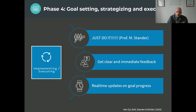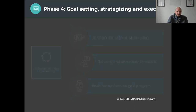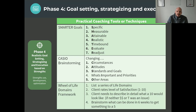We need to figure out a way to give real-time updates on goal progress. I utilize an application we've developed where a person can update their progress and I can also track where they are. There are certain strategies you can use — SMARTER goals: specific, measurable, attainable, realistic, and time-balanced goals that are also evaluative and can be readjusted if things don't go well. There's also the CASIO brainstorming technique: looking at what circumstances need to change, what attitudes need to change, what standards and goals you're setting, what the most important priorities are, and what other domains you can focus on to help you grow.